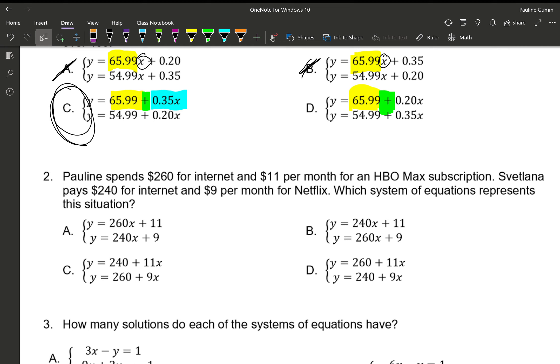Number 2. Pauline spends $260 for internet and $11 per month for an HBO Max subscription. Svetlana pays $240 for internet and pays $9 per month for Netflix. Which system of equation represents this situation? Like the previous problem, let's look at Pauline's situation first. So Pauline spends $260 for internet. I'm going to check every equation and make sure it has a $260, or each system. Each system has a $260.